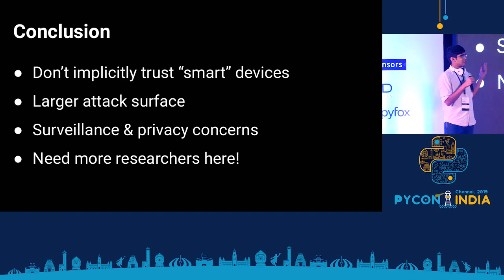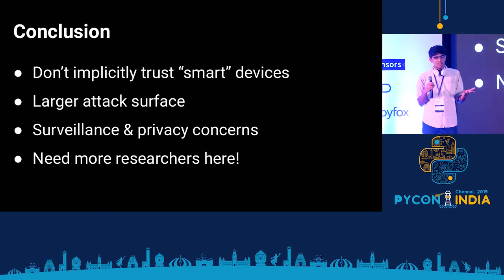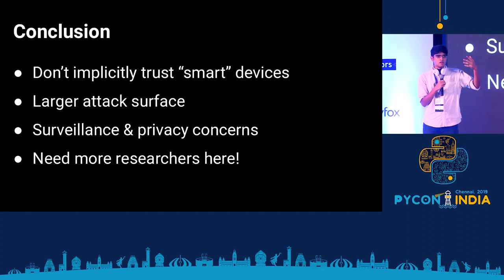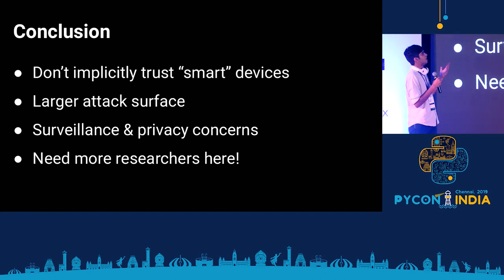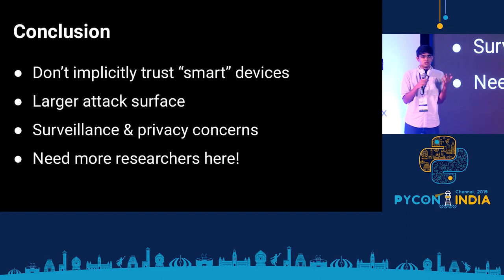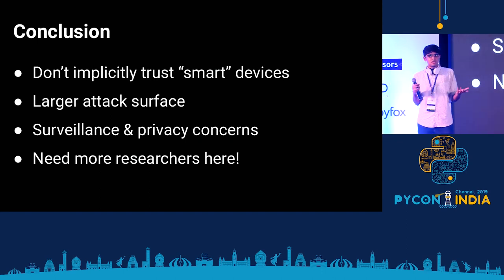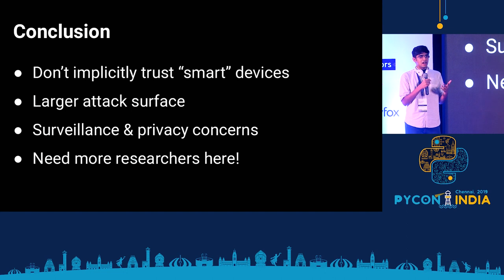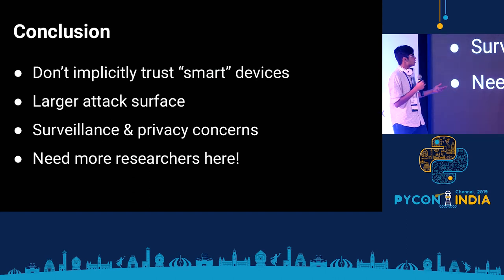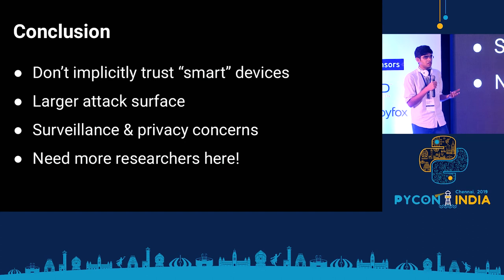To conclude: you can't just trust smart devices. IoT vendors are going to sell their product and claim it's all secure, but someone has to scrutinize it and point out these glaring holes. IoT security research is really small, so don't implicitly trust these smart devices. They bring about a huge attack surface into existing threat models, and nobody even models IoT as part of their threat vector. In enterprise security, nobody thinks IoT is part of their threat vector. People should update and factor in IoT and hardware as a potential attack surface.